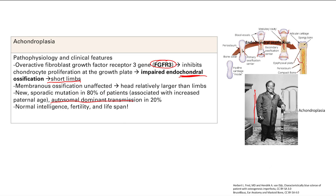All you have to do is remember Tyrion Lannister — that guy is very smart and very fertile. These patients have normal intelligence, normal fertility, and normal lifespan. They're just short. That's the only thing.